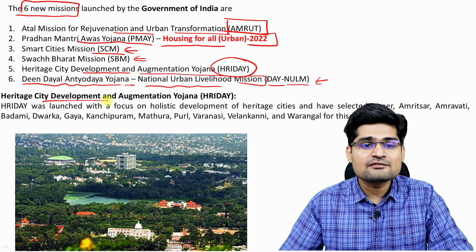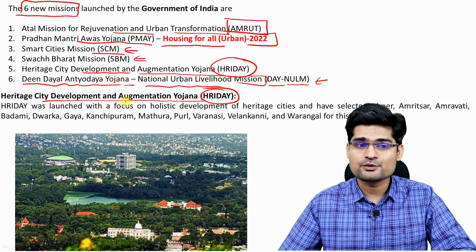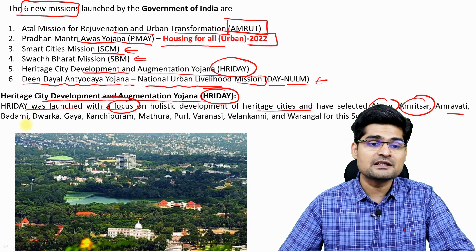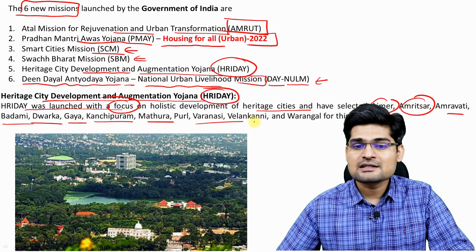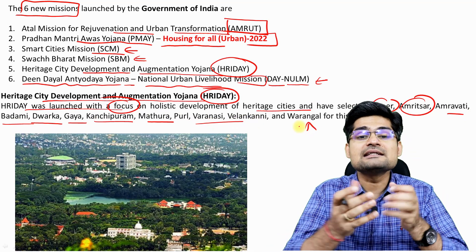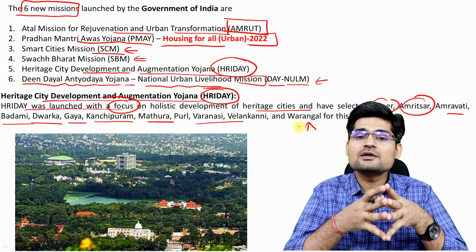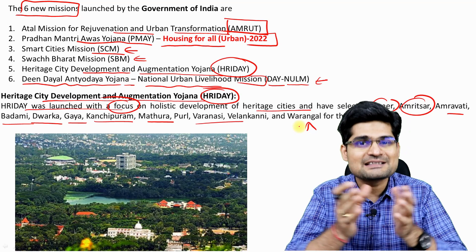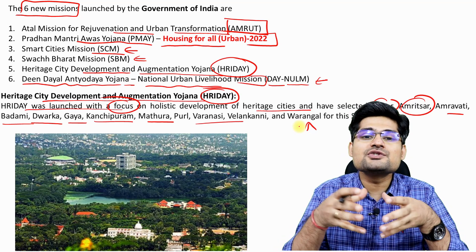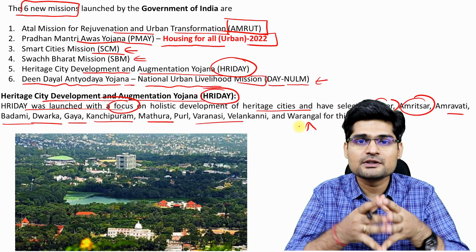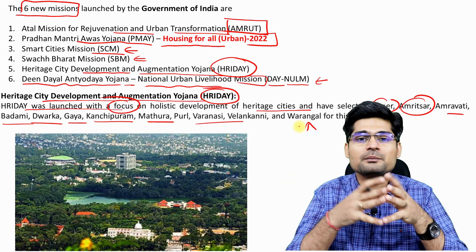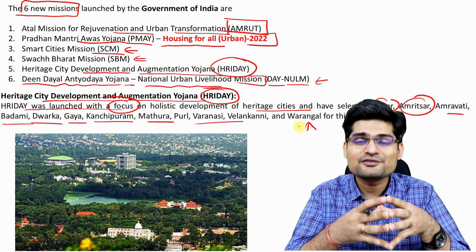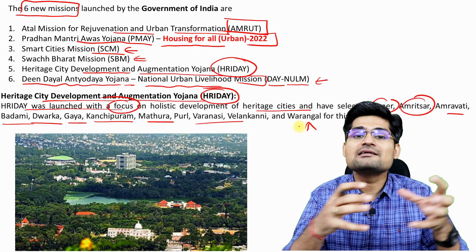The Hridaya Yojana — Heritage City Development and Augmentation Yojana — is a very specific scheme launched with a focus on holistic development of heritage cities such as Ajmer, Amritsar, Amravati, Badami, Dwarka, Gaya, Kanchipuram, Mathura, and Varanasi, among others. Heritage cities are part of our ancestral cultures, and developing them ensures tourism, economic growth, and the sustainability of these heritage sites. These kinds of Yojanas led by the Indian government aim to create better urban planning and a resilient, livable future city.